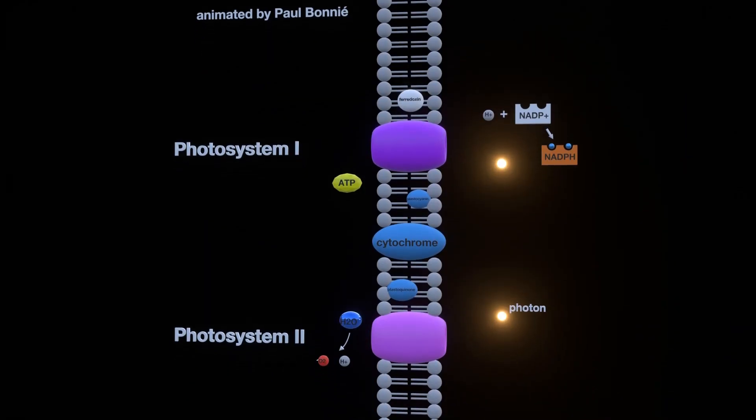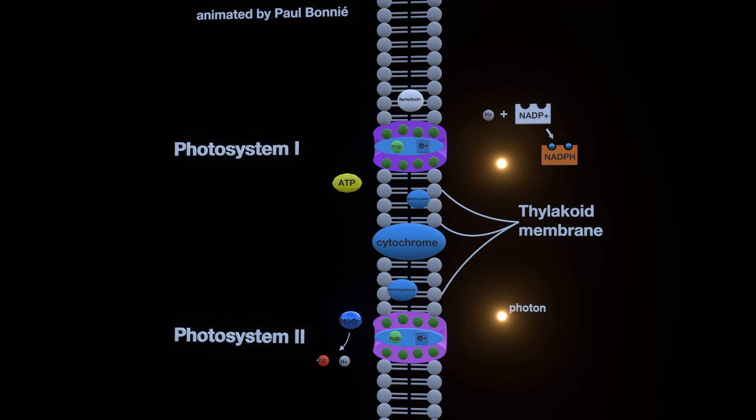I'm going to show you how photosystems 1 and 2 work. Here we have a thylakoid membrane, photosystem 2 at the bottom and photosystem 1 at the top.